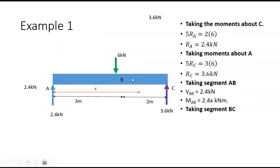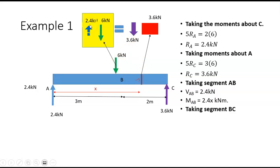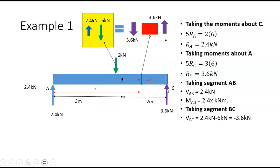Now let's take a segment between B and C on the other side of the six kilonewton force. Looking at the forces on the left-hand side, we have 2.4 and 6 which gives 3.6 kilonewtons going down. On the right-hand side we just have 3.6 kilonewtons going up. So the shear force at this point is minus 3.6 kilonewtons — it's negative because we're taking forces from the left and this resultant acts downward.